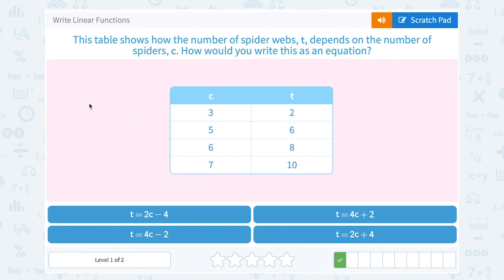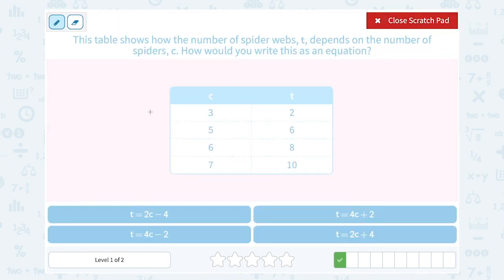This table shows how the number of spider webs T depends on the number of spiders C. How would you write this as an equation? Let's take a look at our data.